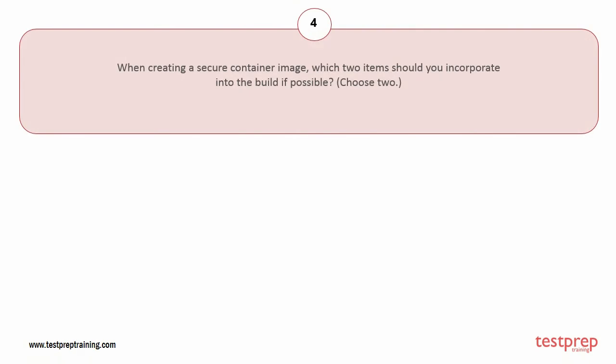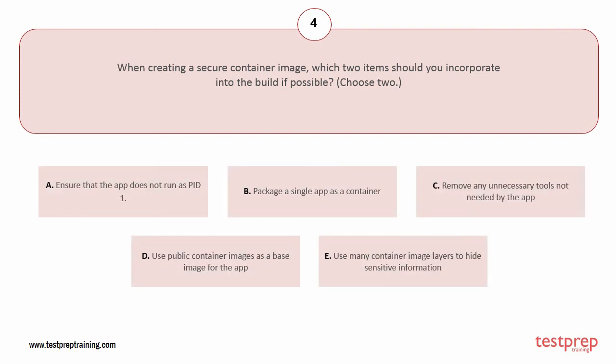Question number four: when creating a secure container image, which two items should you incorporate into the build if possible? Choose two. Options: A) ensure that the app does not run as root. B) package a single app as a container. C) remove any unnecessary tools not needed by the app. D) use public container images as a base image for the app. E) use many container image layers to hide sensitive information.